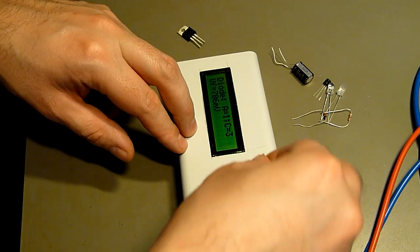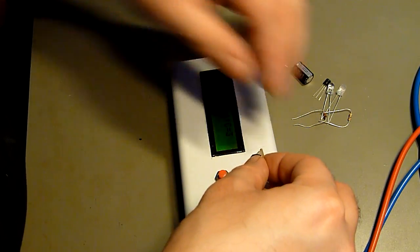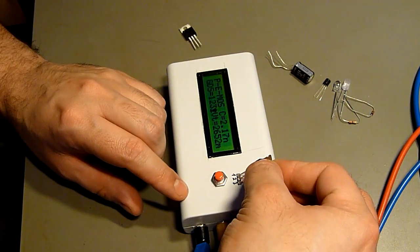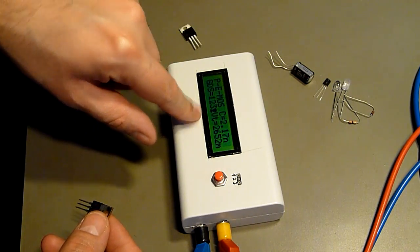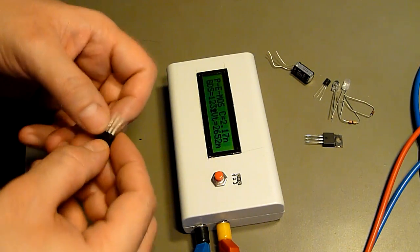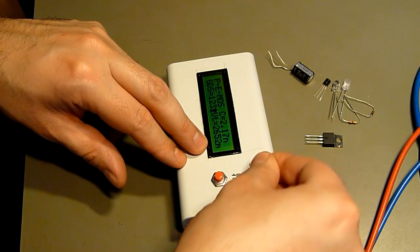This is a MOSFET. I can't get it in so I just hold it. You see, it even says there's a protective diode. It even says the gate capacity and all that stuff. Let's see, this is great.